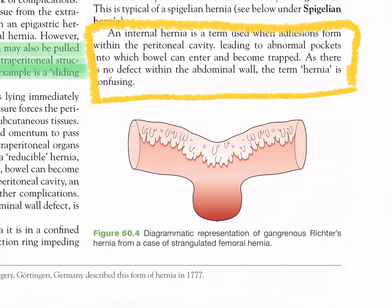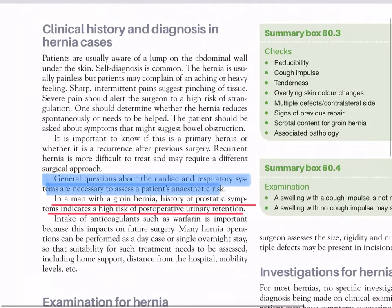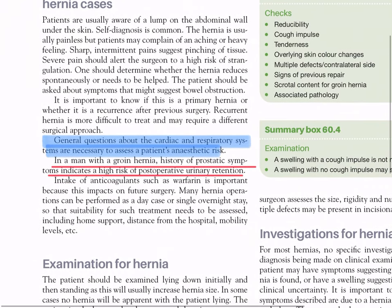Figure 60.4 shows a diagrammatic representation of gangrenous Richter's hernia from a case of strangulated femoral hernia. In clinical history, patients are usually aware of a lump in the abdominal wall — self-diagnosis is common. The hernia is usually painless but patients may complain of an aching or heavy feeling. Sharp intermittent pains suggest pinching of tissue; severe pain should alert the surgeon to a higher risk of strangulation. One should determine whether the hernia reduces spontaneously or needs to be helped, and ask about symptoms suggesting bowel obstruction. It is important to know if this is a primary hernia or a recurrence after previous surgery, as recurrent hernia is more difficult to treat. General cardiac and respiratory history is necessary to assess anesthetic risk.